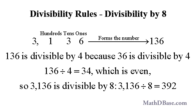In the number 3,136, the ones, tens, and hundreds digits form the number 136. We know that 136 is divisible by 4 because 36 is divisible by 4, and that result is 34, which is even, so 136 is divisible by 2 times 4, or 8. Therefore, 3,136 divided by 8 equals 392.